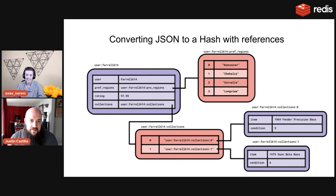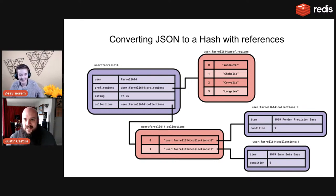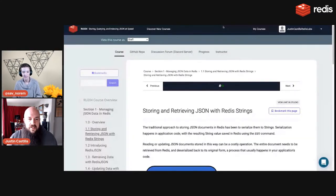That was all the pre-JSON background. With native Redis JSON support, you simply take a JSON blob, wrap it in single quotes, and send it into Redis using the correct command. Redis will automatically recognize it and store it as a JSON object, letting you manipulate it as JSON.